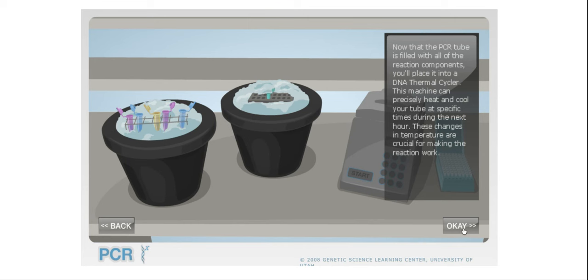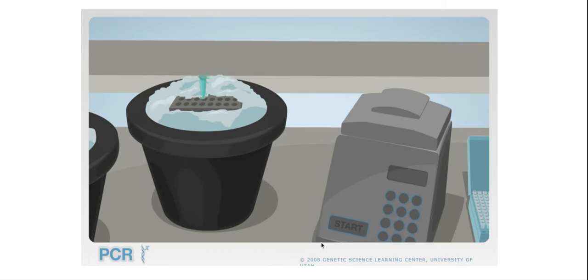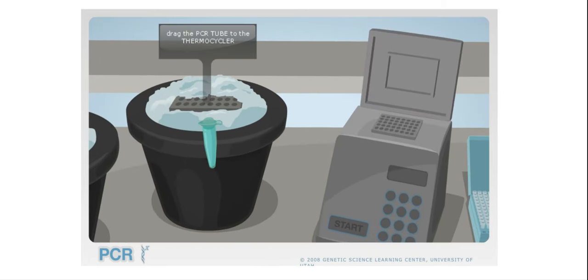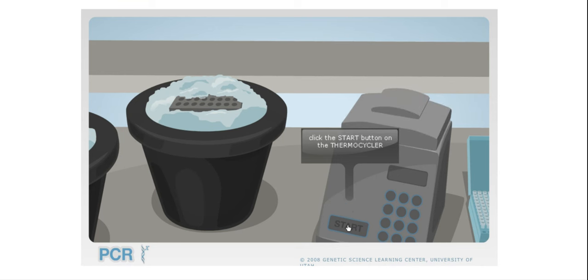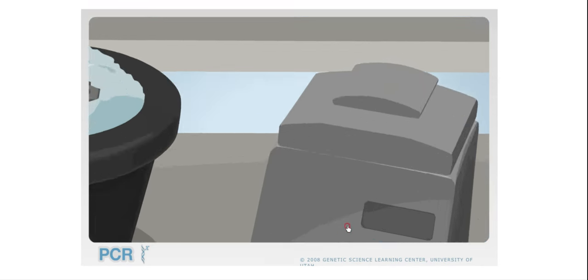You also need a machine called a thermocycler. All the thermocycler does is change temperatures on a regular basis—thermo means temperature, and during each cycle it's going to change. Its only role is to heat and cool at regular intervals. Before the thermocycler was invented, people used to do this with hot water baths. They would set the water baths to certain temperatures and then move the tubes every 45 seconds to every minute and a half for hours. So the thermocycler is pretty awesome.